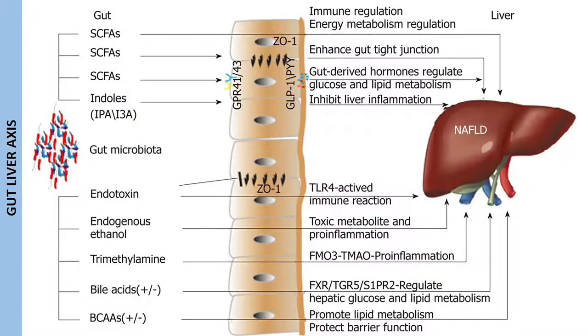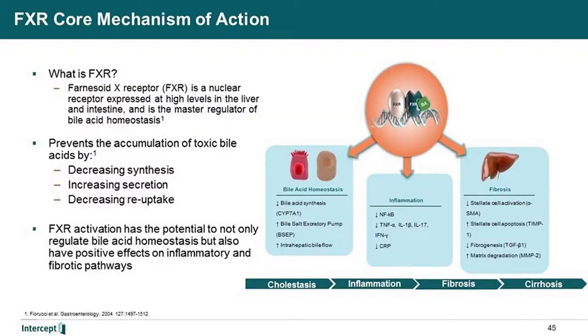The microbiome encourages the liver to store more fat, which can progress to hepatitis. These FxR — farnesoid X receptors — when deranged, can cause inflammation, fibrosis, deranged lipid metabolism, deranged glucose metabolism, and lipogenesis.